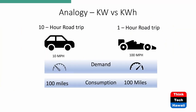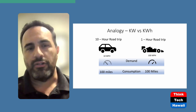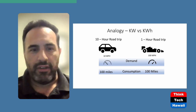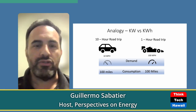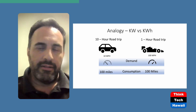Why does this matter? Let's look at an analogy: a one-hour road trip. Think of a vehicle's odometer as consumption — that's megawatt hours or kilowatt hours. Demand is your speed — the rate at which you can put power out at any given point. You have a slow station wagon and a race car. The slower vehicle running at 10 miles per hour on a 10-hour road trip covers 100 miles. The race car traveling at 100 miles per hour covers that same 100 miles in just one hour.